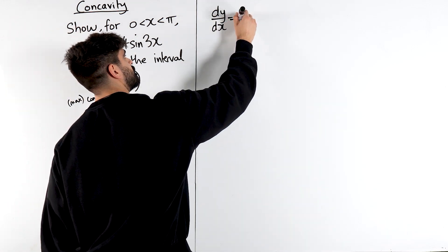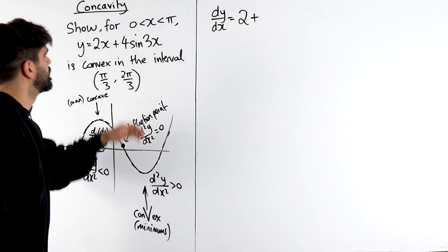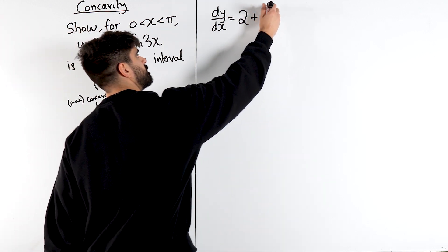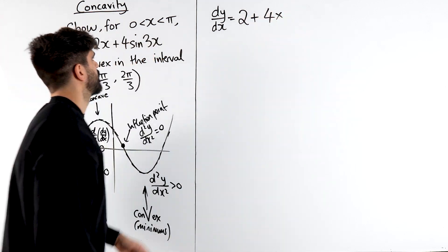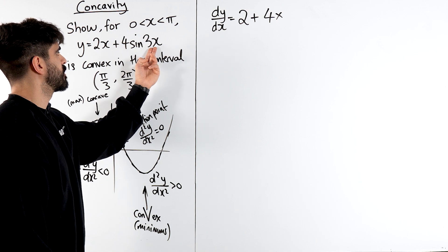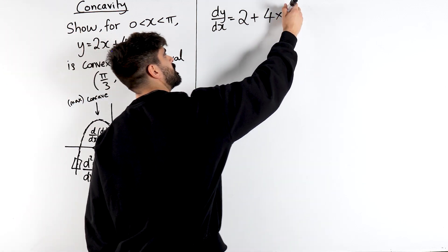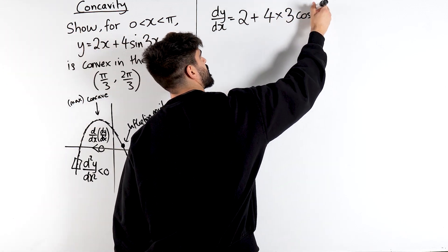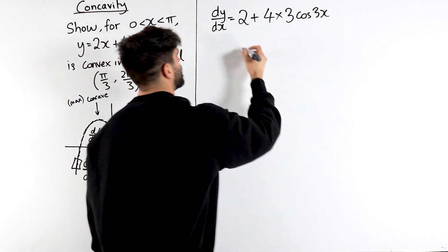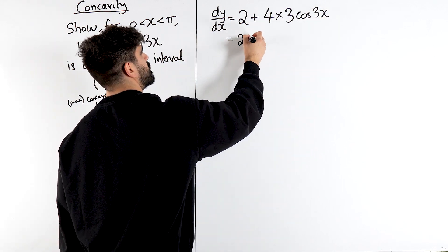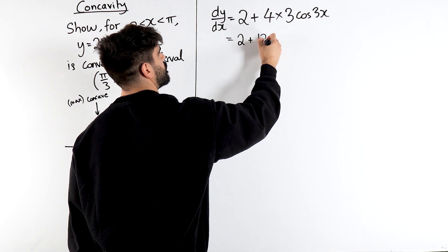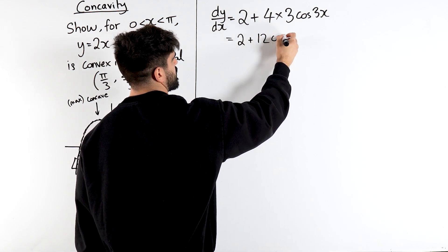Okay, 2x just differentiates to 2 plus. 4 is just a multiplier. How do you differentiate sin 3x? Differentiate the angle. 3x differentiates to 3. Sin differentiates to cos. Angle stays the same. So we just have 2 plus, what's that? 12cos(3x).